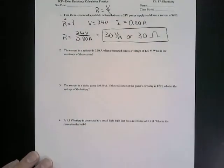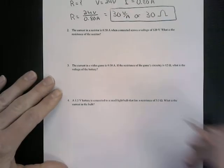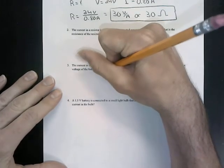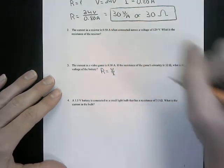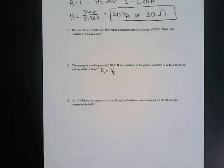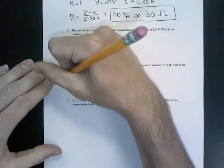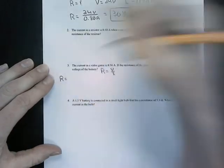Now, moving down to number three, we're going to solve for a different portion of our formula here. And so remember, we're still using the same formula of R equals V divided by I. And the problem says the current in a video game is 0.50 amps. If the resistance in the game circuit is 12 ohms, we want to know what is the voltage of the battery.